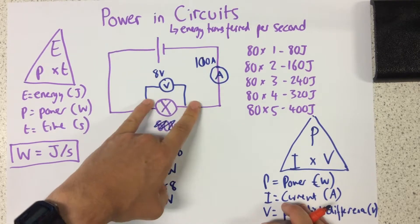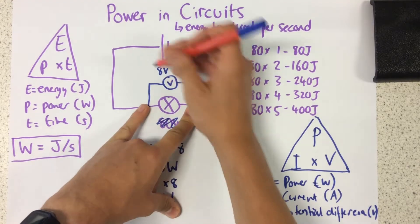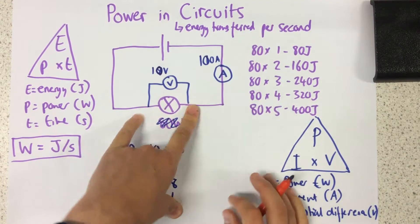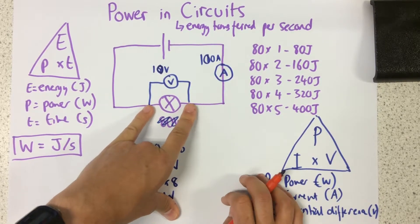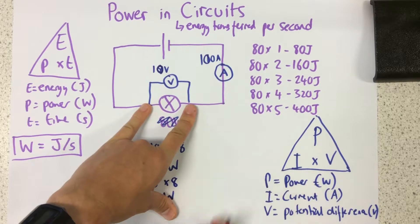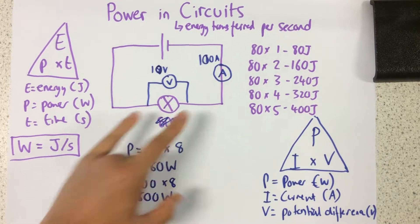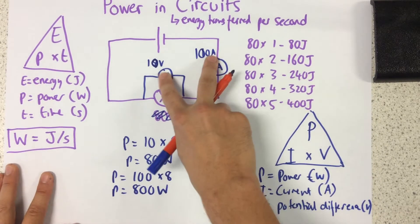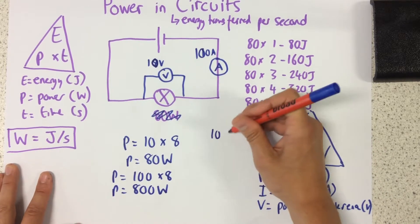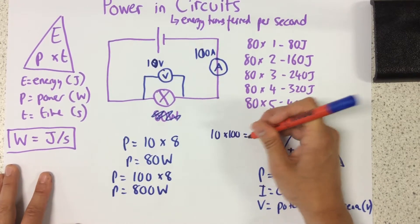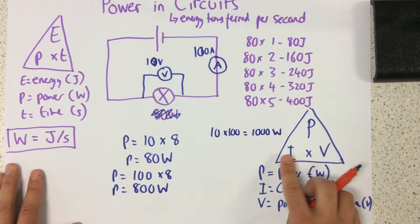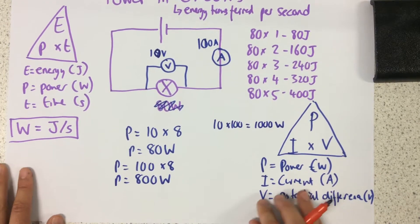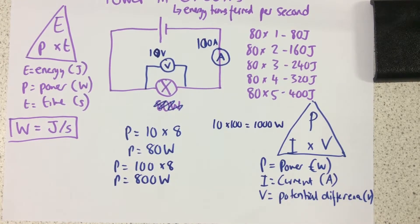Similarly, if I increase my potential difference, so let's say now I've got 10 volts instead, because more energy is being transferred across this component, I'm also going to have a bigger power. So this time for this example here, I'd have 10 times 100, which equals 1000 watts. So by either increasing my current or increasing my potential difference, I'm also increasing the power.